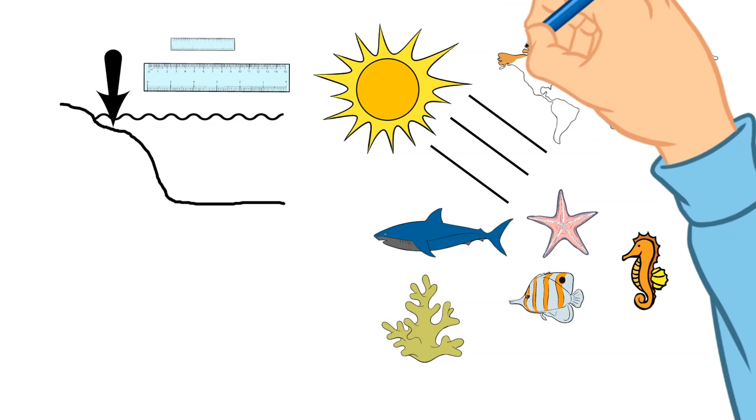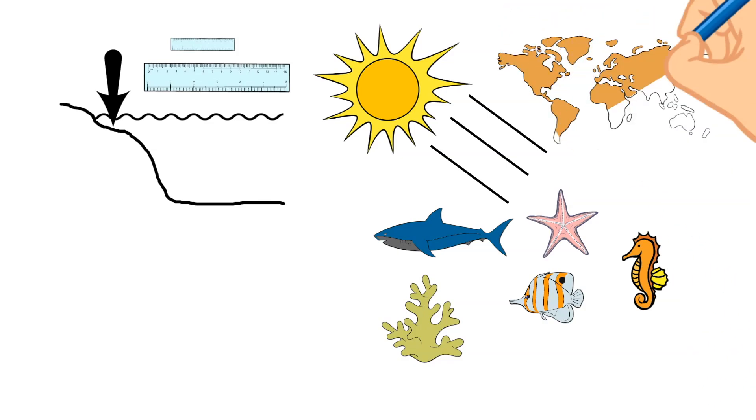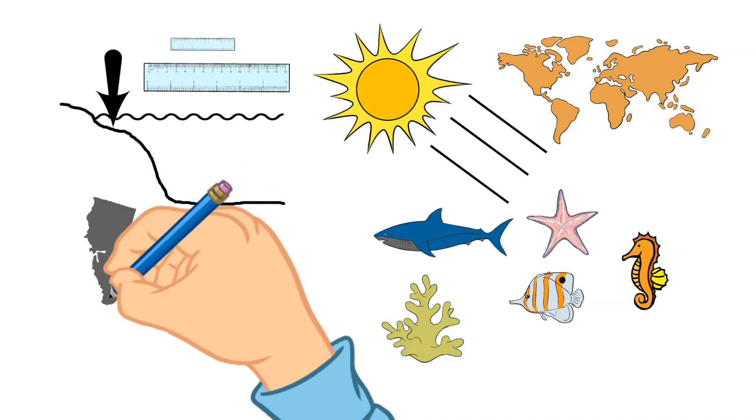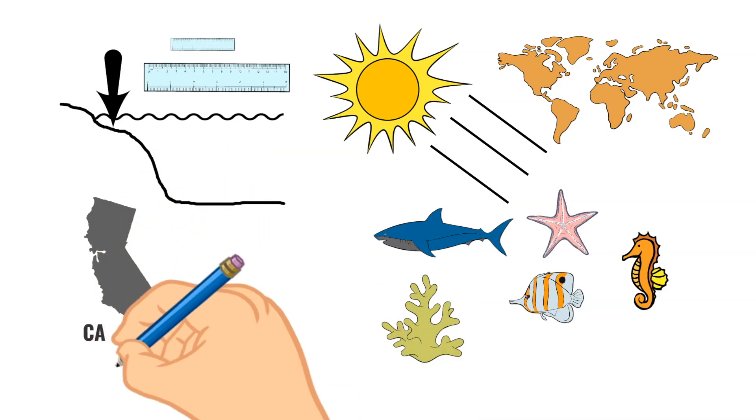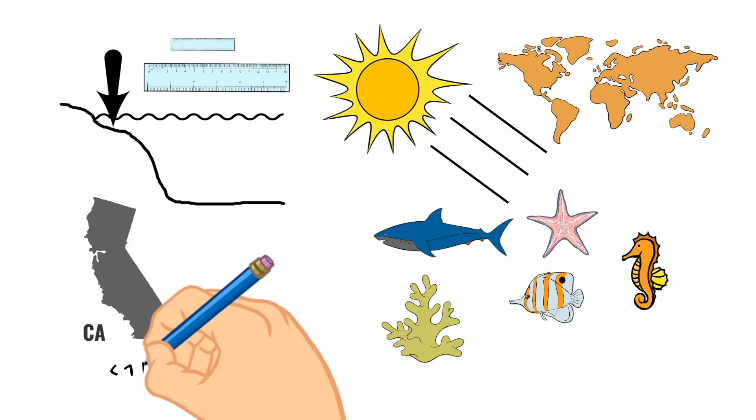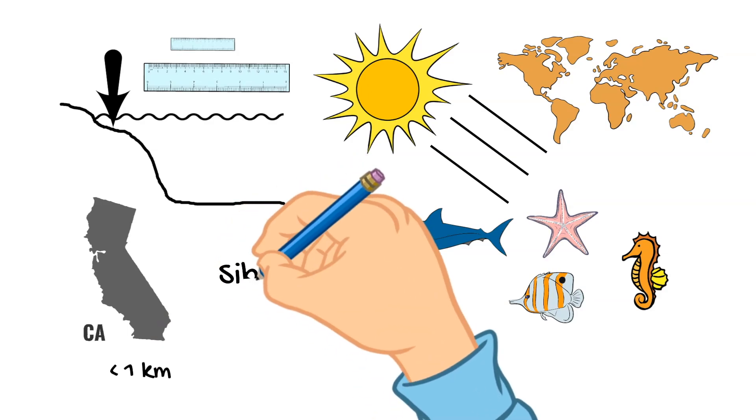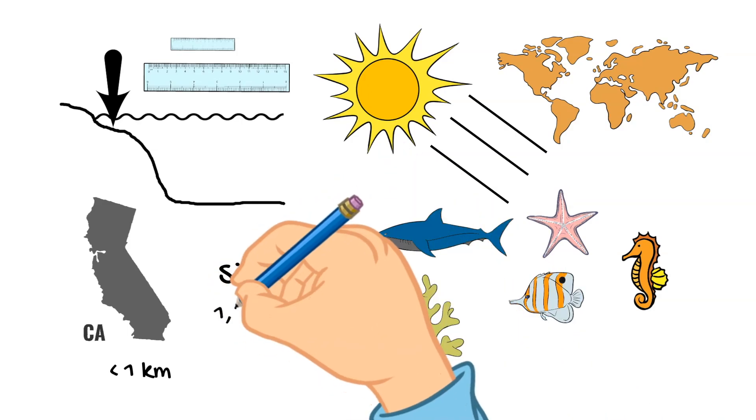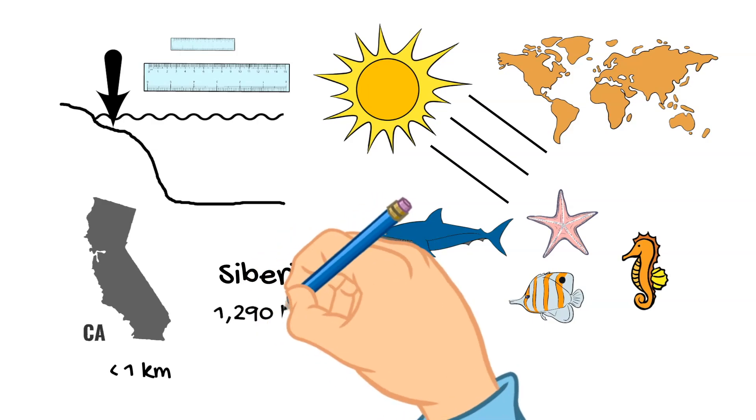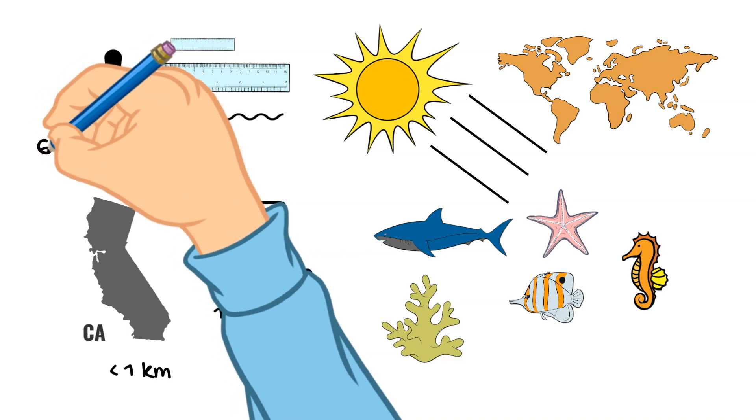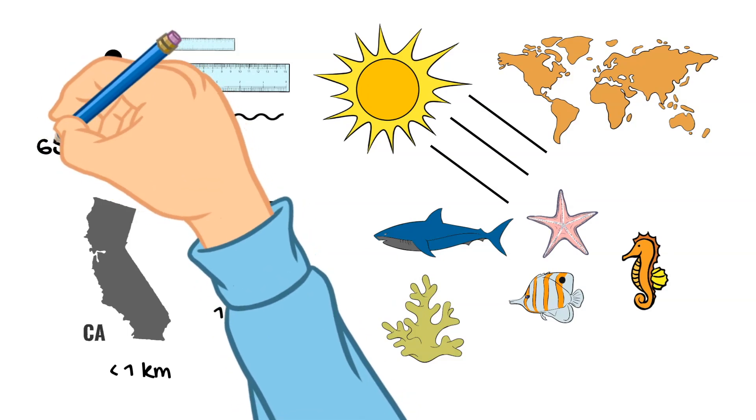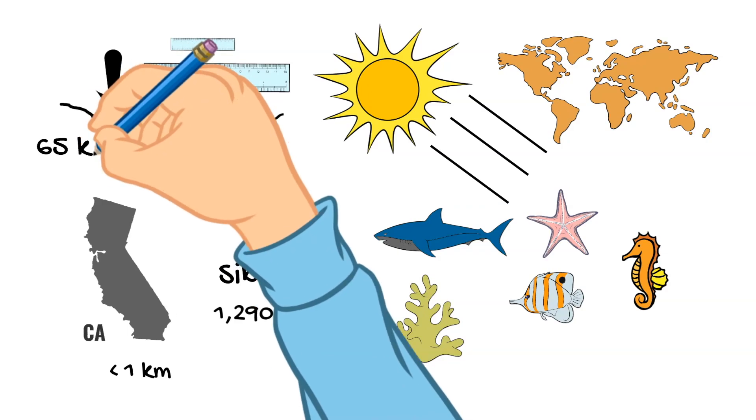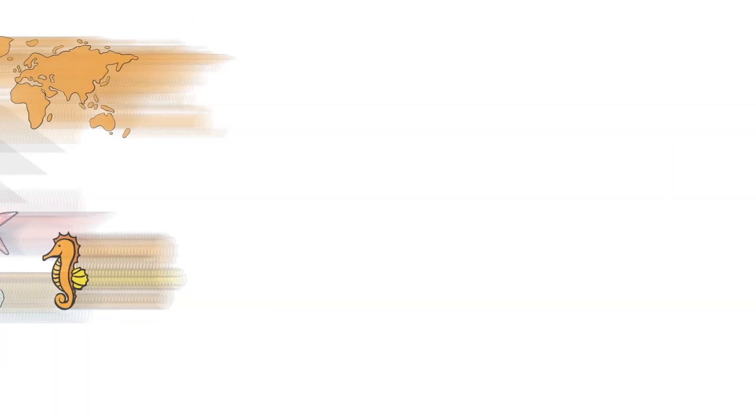The actual boundary of a continent isn't the coastline like you would think, but it is the edge of that continental shelf. The continental shelf next to California in the United States is very small, extending less than a kilometer. In contrast, along the northern coast of Siberia, this continental shelf extends almost 1,290 kilometers, which is 800 miles. Taking these distances into consideration, the average width of a continental shelf is about 65 kilometers or 40 miles off the coastline.